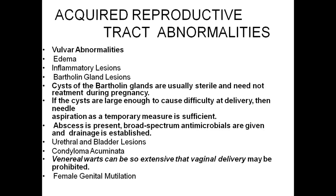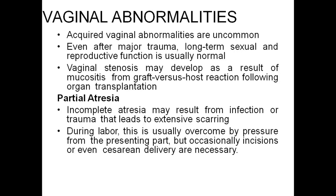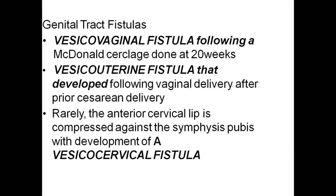Urethral and bladder lesions: genital warts can also be so extensive that vaginal delivery may be prohibited. Female genital mutilation and acquired vaginal abnormalities are uncommon. Even after major trauma, long-term sexual and reproductive function is normal. Vaginal stenosis may develop as a result of mucositis and graft-versus-host reaction following organ transplantation. Partial atresia: incomplete atresia may result from infection or trauma that leads to extensive scarring. This is usually overcome by pressure from the presenting part, but occasionally incisions or even cesarean delivery may be necessary.